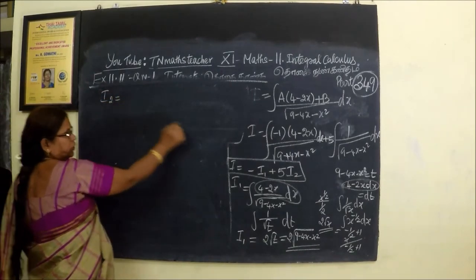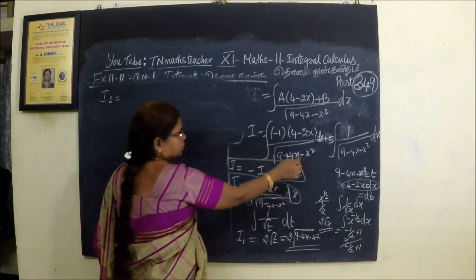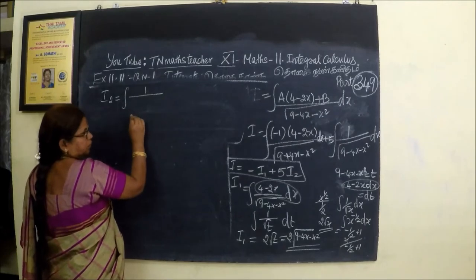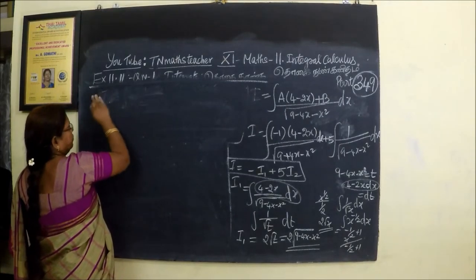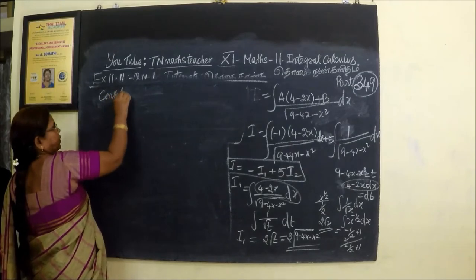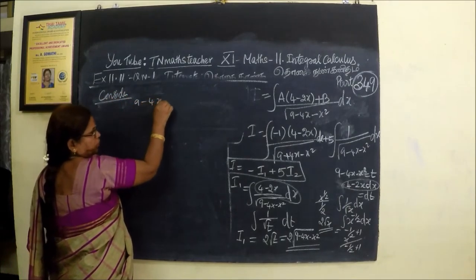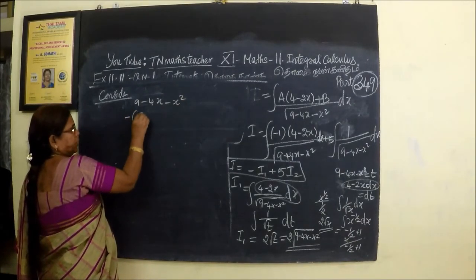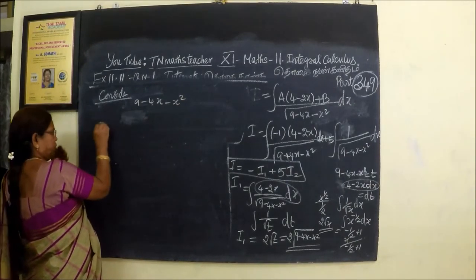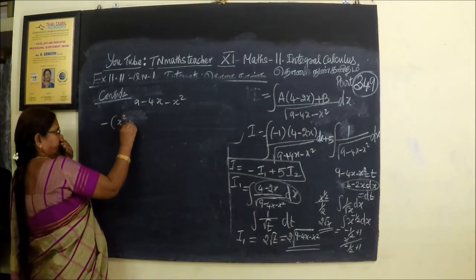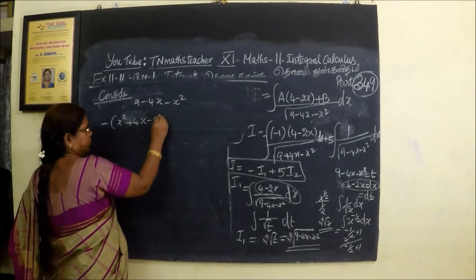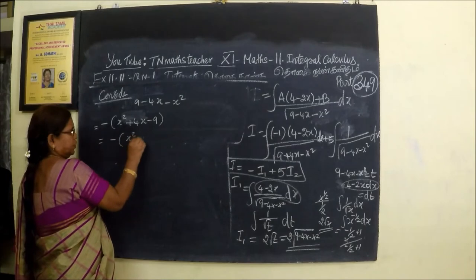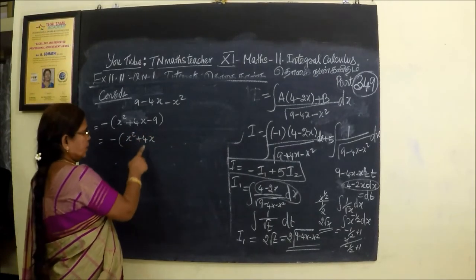I2 equals the integral of 1 by root of 9 minus 4x minus x squared. We convert to standard form. Consider x squared plus 4x minus 9, which equals minus of x squared plus 4x minus 9.